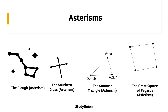There are also a couple of asterisms you need to know. Firstly, you'll need to know what the Plough asterism looks like. You also have to know what the Southern Cross asterism looks like — it's basically just a cross in the sky. Thirdly, you might need to know the Summer Triangle asterism, which contains three stars: Deneb, Vega, and Altair.